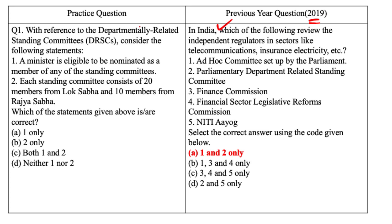Now let's come to the practice question. You have to identify the correct statements with respect to Departmentally Related Standing Committees, i.e., DRSCs. Statement one: a minister is eligible to be nominated as a member of any of the standing committees. Statement two: each standing committee consists of 20 members from Lok Sabha and 10 members from Rajya Sabha. Before answering, let me briefly explain DRSCs. 17 departmentally related standing committees were set up in Parliament in 1993 on the recommendations of the Rules Committee of the Lok Sabha. In 2004, 7 more were added, increasing their number from 17 to 24. The main objective is to secure more accountability of the executive, i.e., Council of Ministers, to the Parliament — particularly financial accountability — and to assist Parliament in debating the budget more effectively.